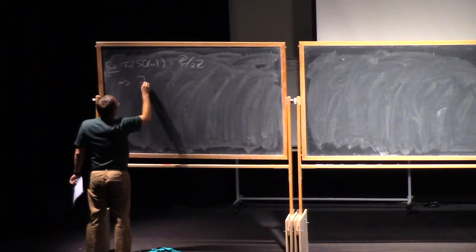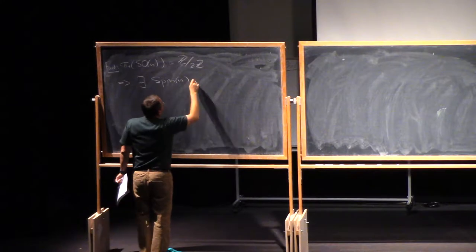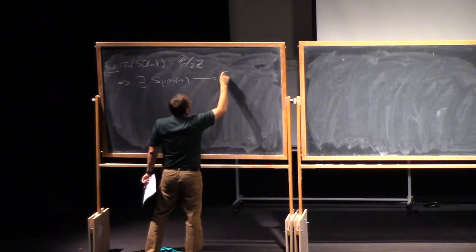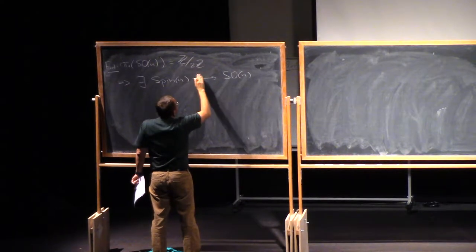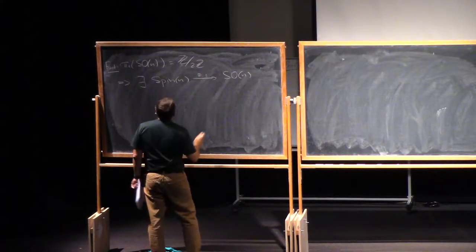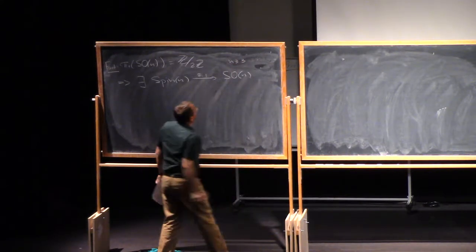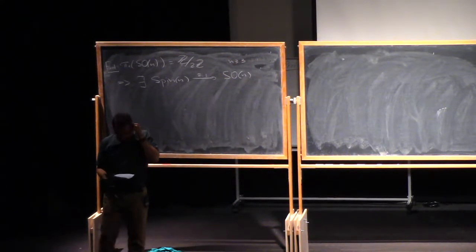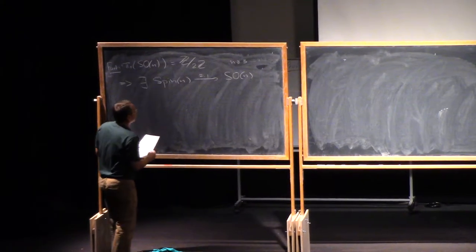But this implies that there is a group which double covers SON. So, there exists a group, spin N, such that this is a double cover of SON, when this is 2 to 1. And I have to require here that N is at least 3, because for N equals 2, this works a little different.